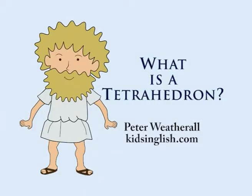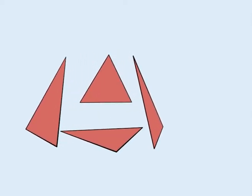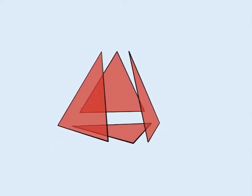What is a tetrahedron? A tetrahedron is a three-dimensional shape or figure made up of four sides or faces, where each side is a triangle.